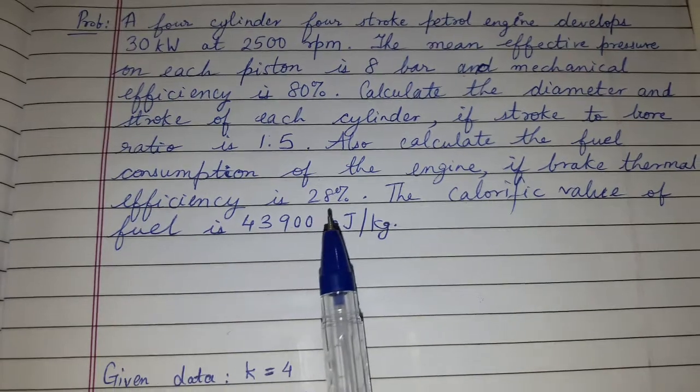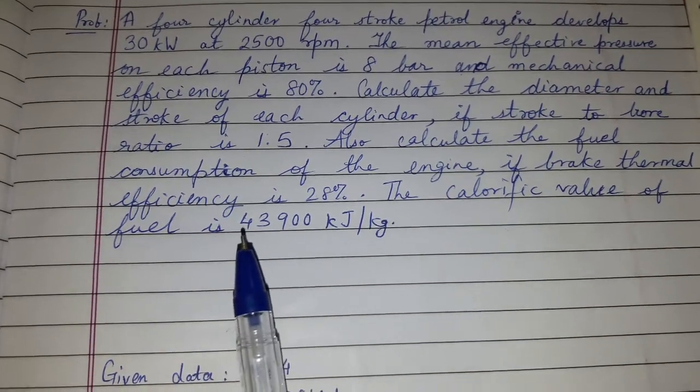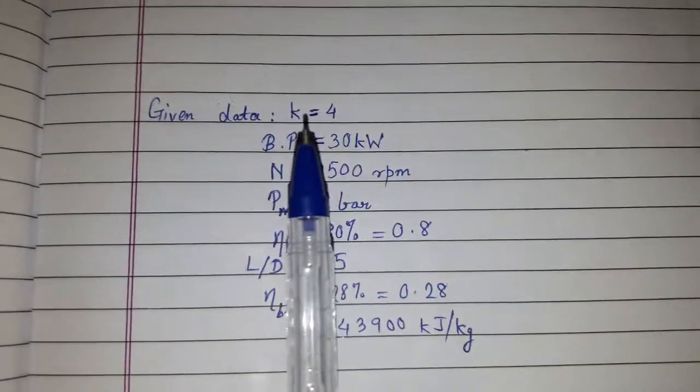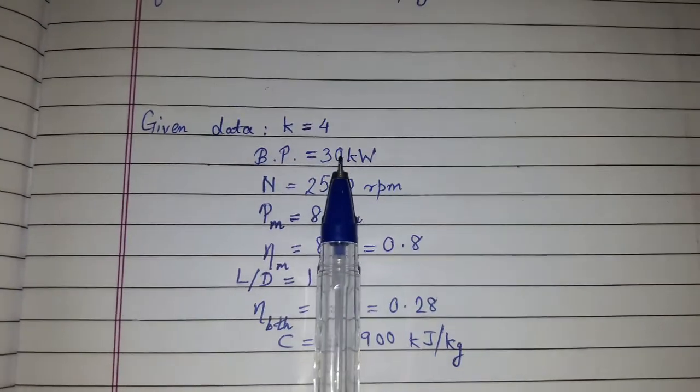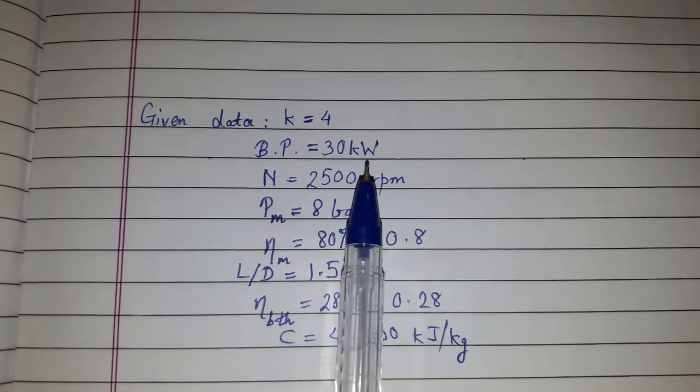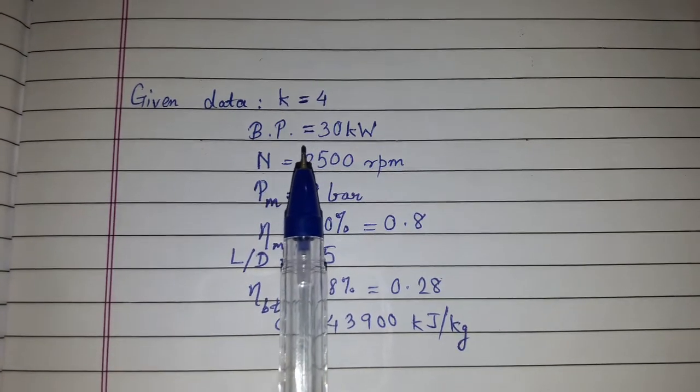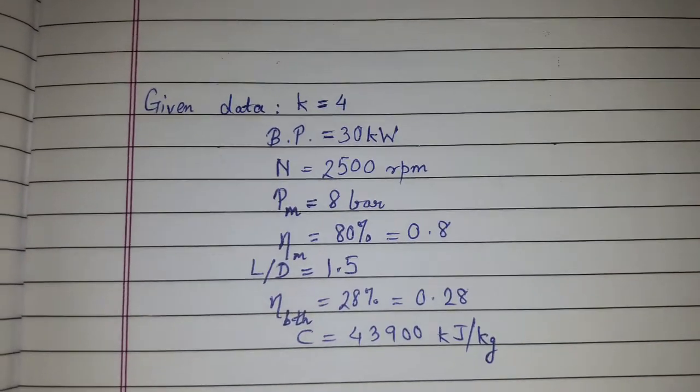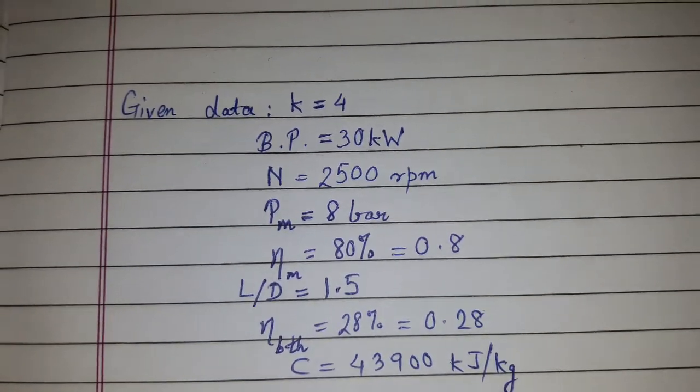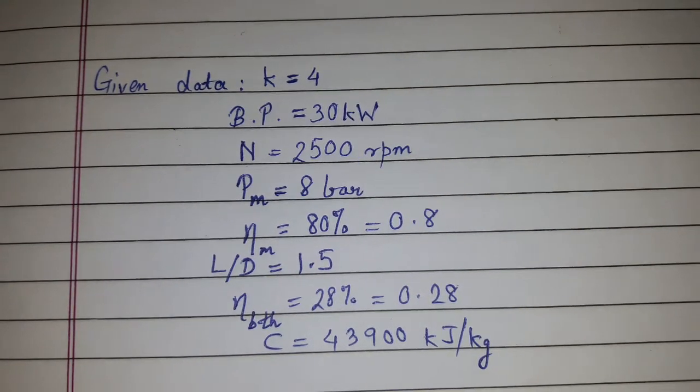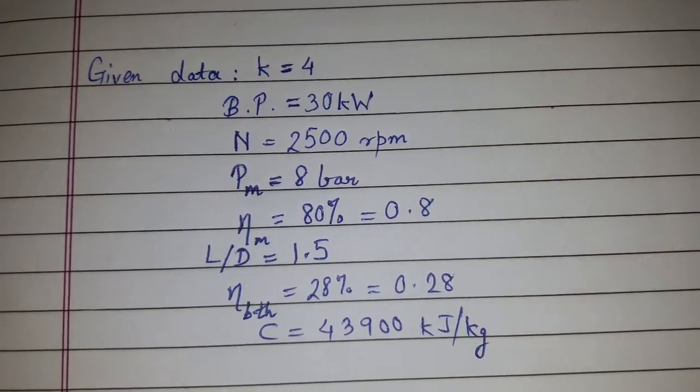The calorific value of fuel is 43,900 kJ per kg, that is C or CV. So the given data is K equals 4, BP equals 30 kilowatts. It is BP because it is given at 2500 rpm, and BP is the power available at the crankshaft. If we talk about indicated power, that is IP, IP is the power actually developed inside the engine cylinder.